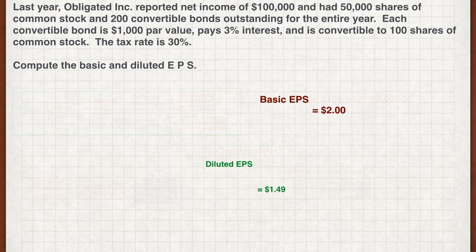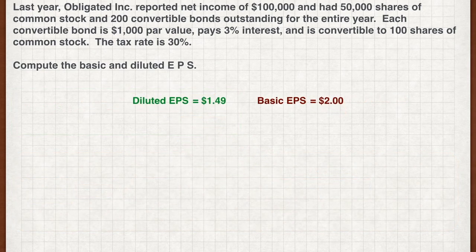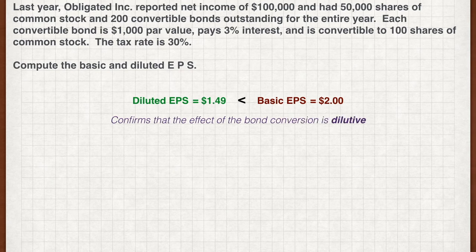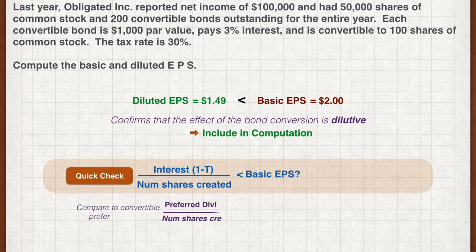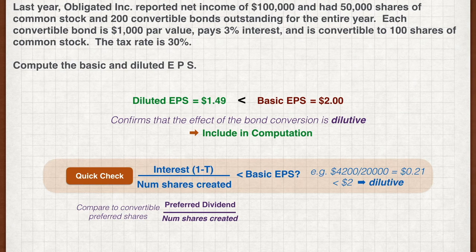The diluted EPS of $1.49 is lower than the basic EPS of $2.00, confirming that the effect of the bond conversion is dilutive and it must be included in the diluted EPS computation. A quick way to check whether the convertible bond is dilutive is to calculate its per-share impact using the after-tax interest divided by new shares formula. For Obligated Inc., this is $0.21, which is less than basic EPS, confirming the convertible bond is dilutive.